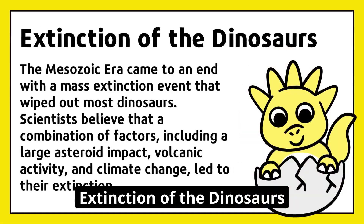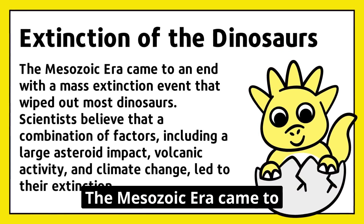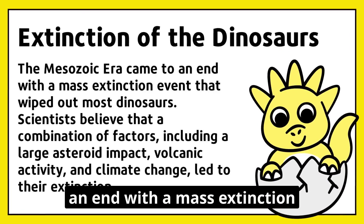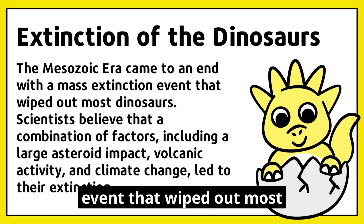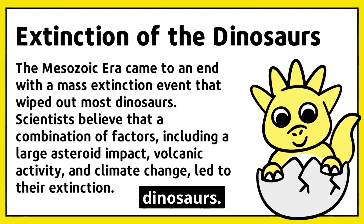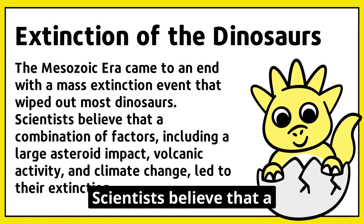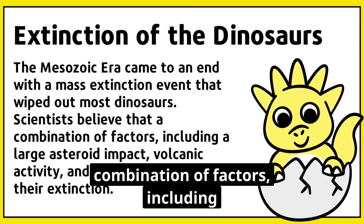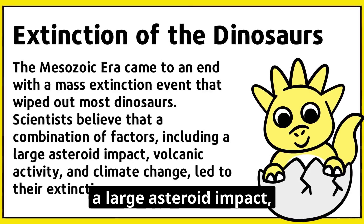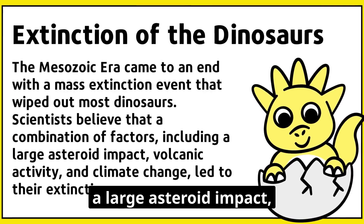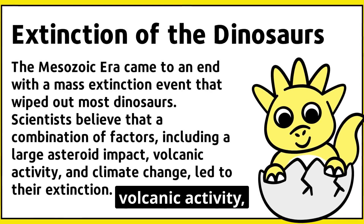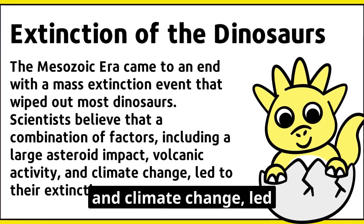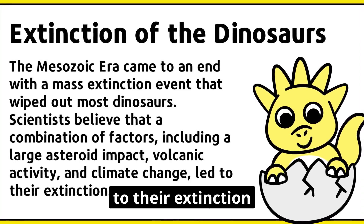The Mesozoic Era came to an end with a mass extinction event that wiped out most dinosaurs. Scientists believe that a combination of factors, including a large asteroid impact, volcanic activity, and climate change, led to their extinction.